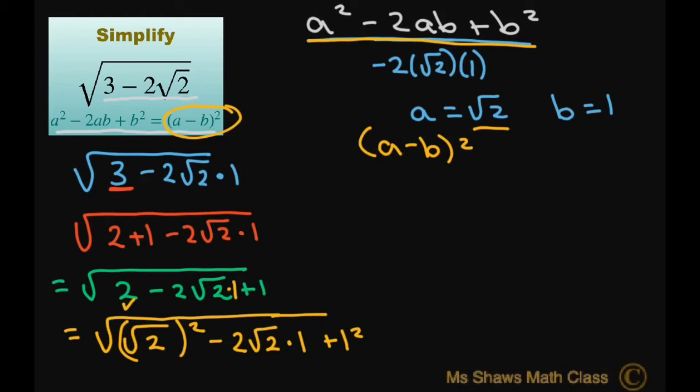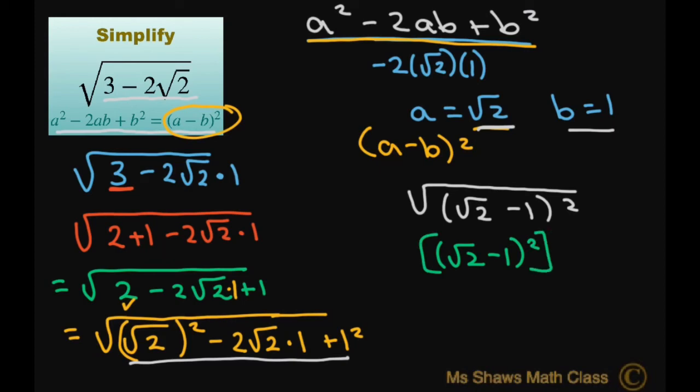So that means I can rewrite this as square root of square root of 2 minus 1 squared. So I just substituted in my a and my b. The square of a square root cancels each other out. This is really a square root of 2 minus 1 squared. And this square root sign here to the 1 half power. So these cancel out and you get the square root of 2 minus 1.